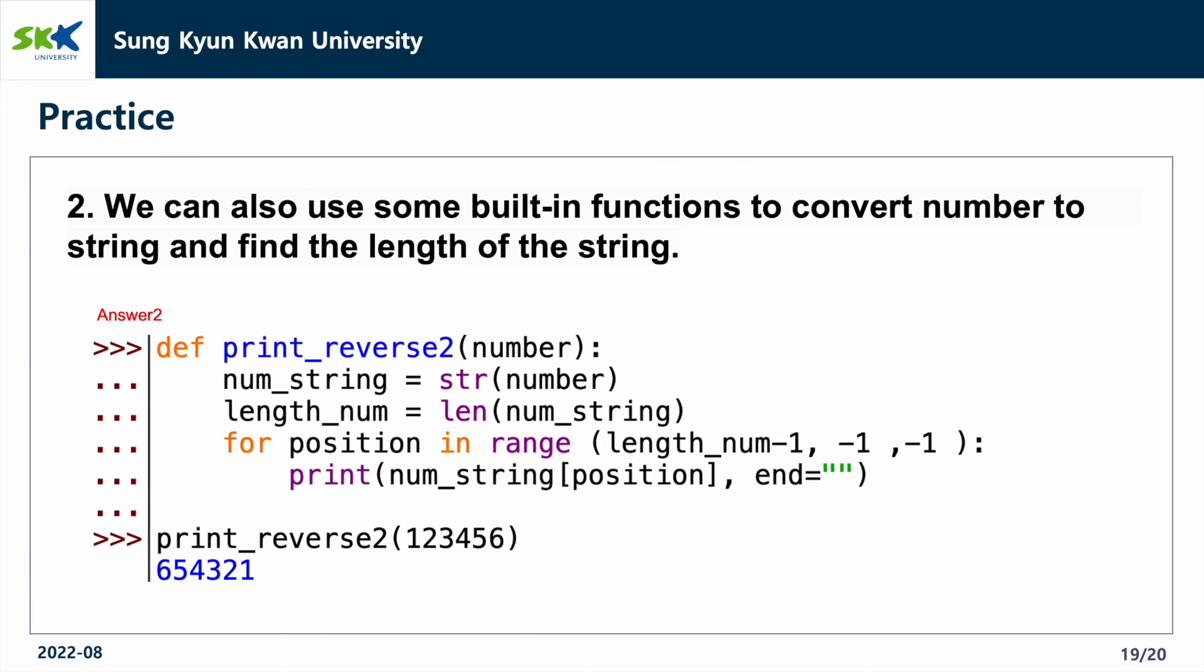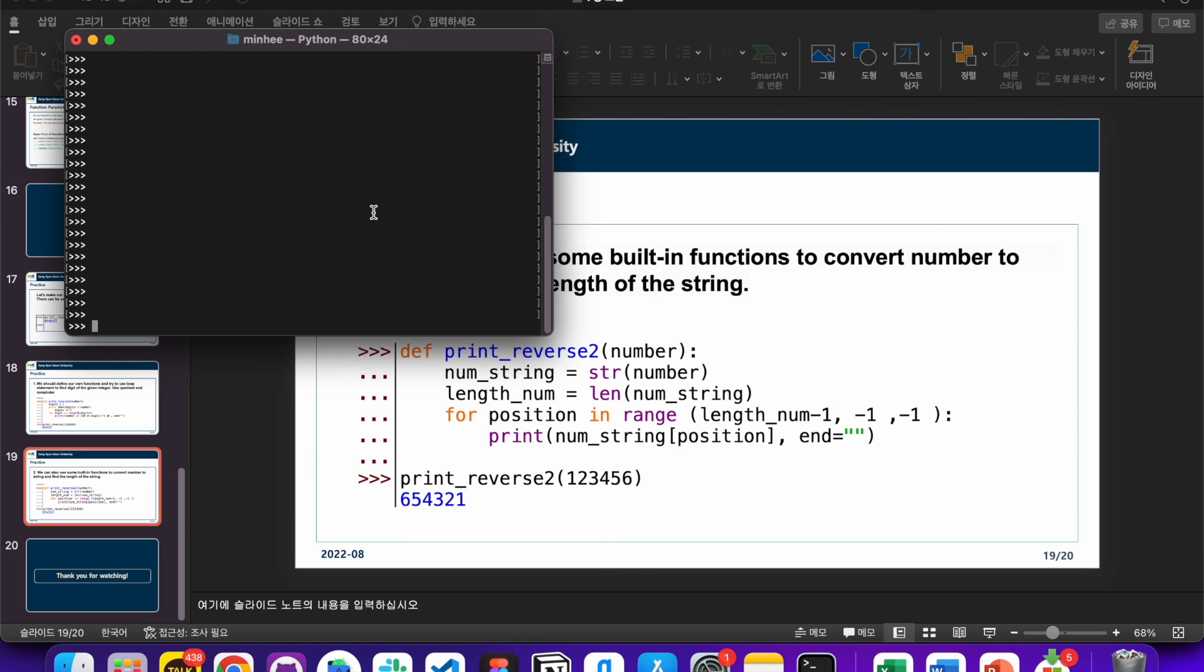We can also use some built-in functions to convert number to string and find the length of the string. Likewise, let's declare a function first. Let's transform it into a string using the built-in function str and print it out from the back of the string. When I run print_reverse2 function, it outputs 654321.